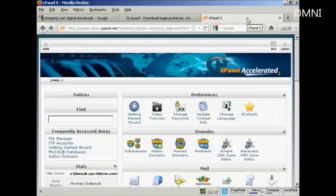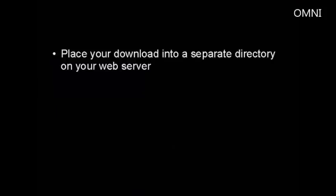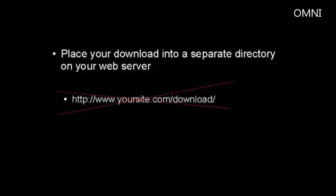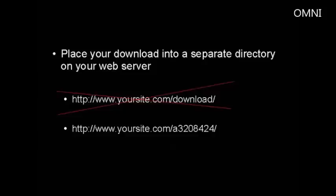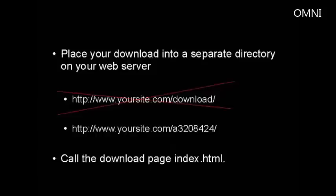The final way of doing this, and probably the simplest and certainly the cheapest, is to password protect your download directory in cPanel. What you have to do is place your digital product into a separate directory on your web server. You want to be imaginative when you decide what to call this directory — something that's not easy to find. For example, you wouldn't want to call it 'download.' I like to give it a random combination of letters and numbers that's very hard to guess. You want to call the actual page in this directory index.html, so you can just send customers to the directory and the web browser will automatically load the index page.